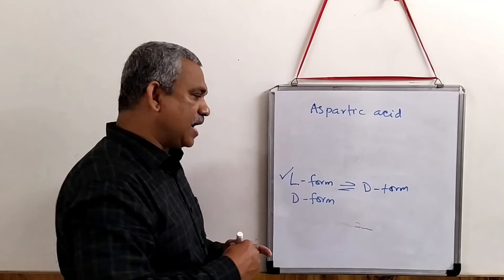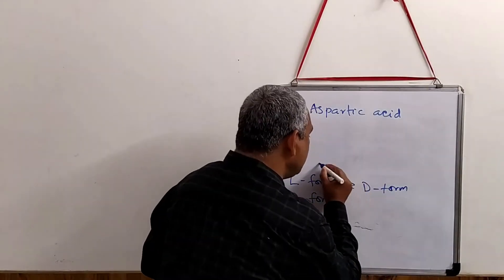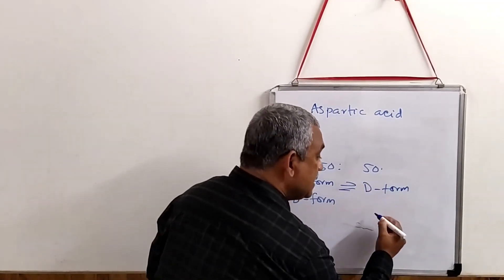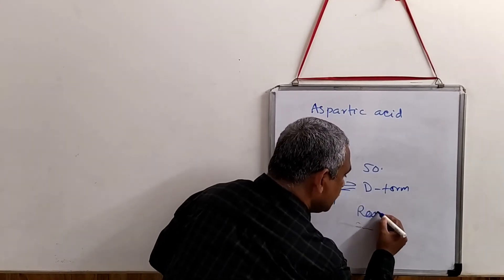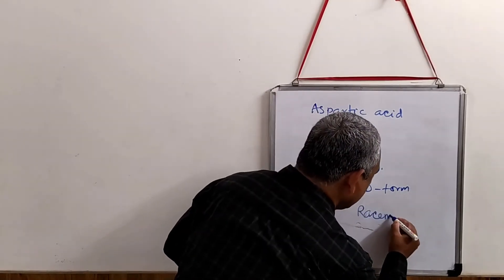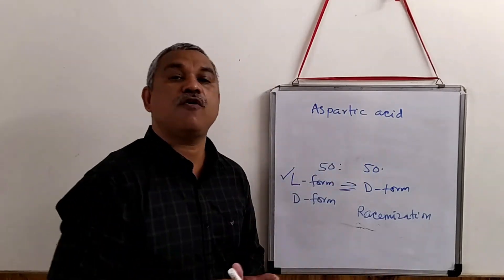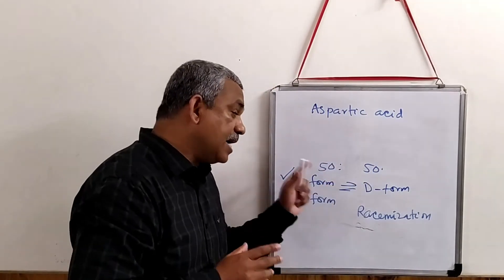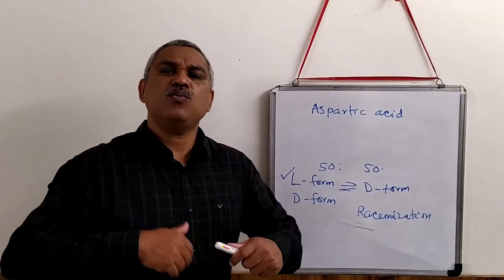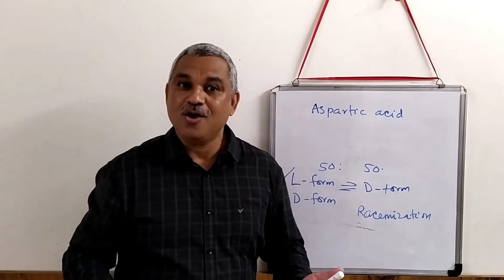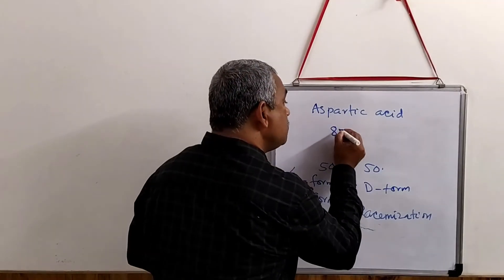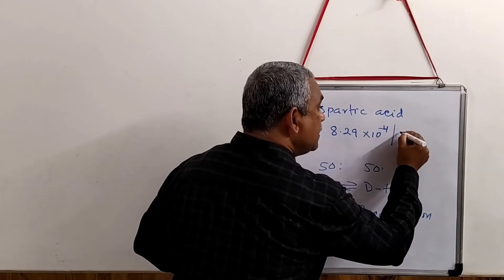With this conversion, at one point the ratio becomes 50:50 - we call this racemization. Racemization of aspartic acid occurs at high temperature and at high alkaline pH. It is a slow process. The racemization rate constant for aspartic acid is about 8.29 × 10⁻⁴ per year.